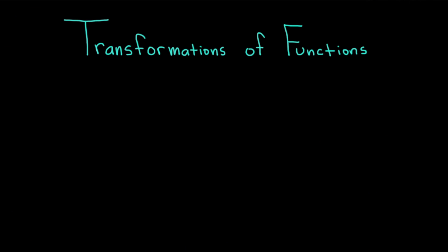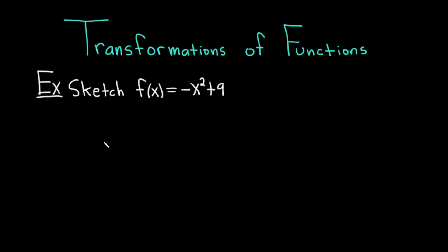Hi, everyone. It's the MathSorcer here with Chegg. In this video, we're going to discuss transformations of functions. Let's go ahead and do an example. We have to sketch the graph of f of x equals negative x squared plus 9. Let's go ahead and work through it.